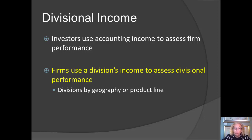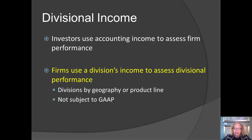We can determine our divisions by where they're located — the eastern division versus the western division — or by product line. This decision is not a GAAP issue; this is for internal assessment.